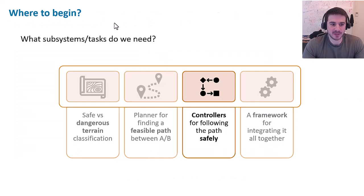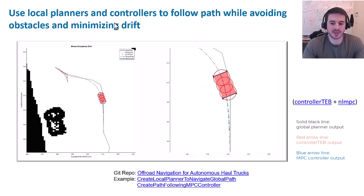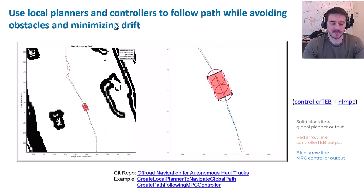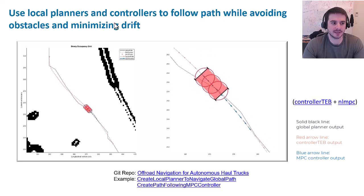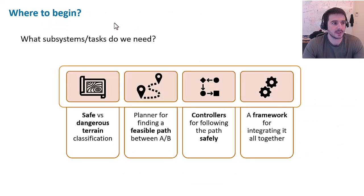Now we have our global path, but we need to be able to follow it — that brings us to our local planner and controller. The local planner is responsible for creating an optimal path in the local vicinity of the vehicle, and then we follow that path using a nonlinear MPC controller. In the video, you can see how we have a fairly jagged reference path coming from our global planner, and ControllerTB provides a smooth reference path in the vicinity for MPC to generate control signals along. MPC is used to ensure a smooth path and minimize any drift that may arise from the vehicle's real-world interaction with terrain.